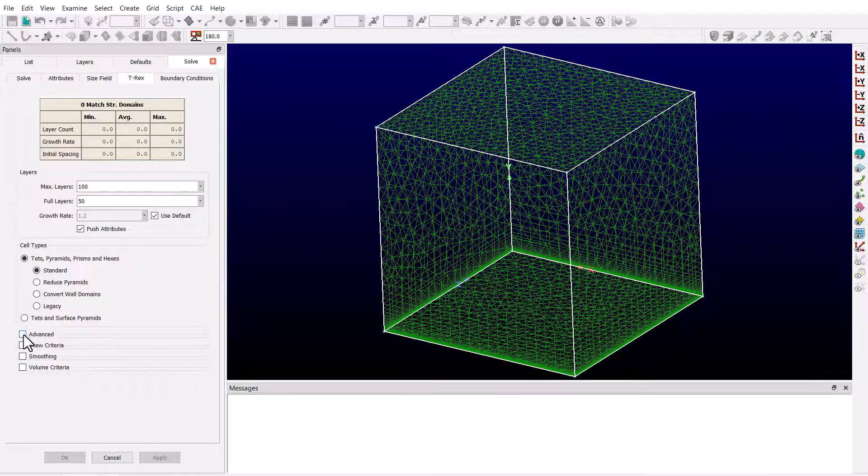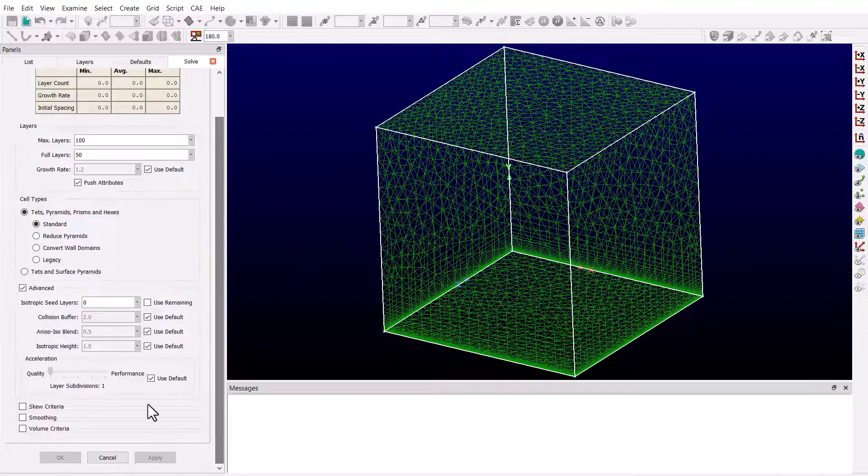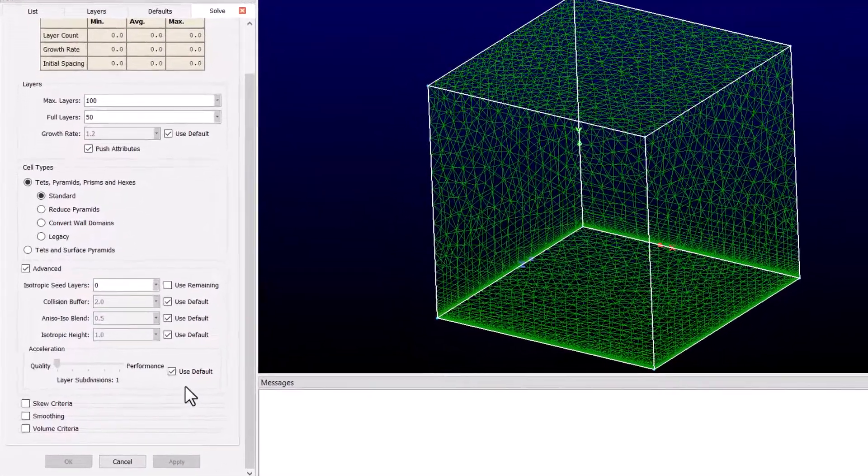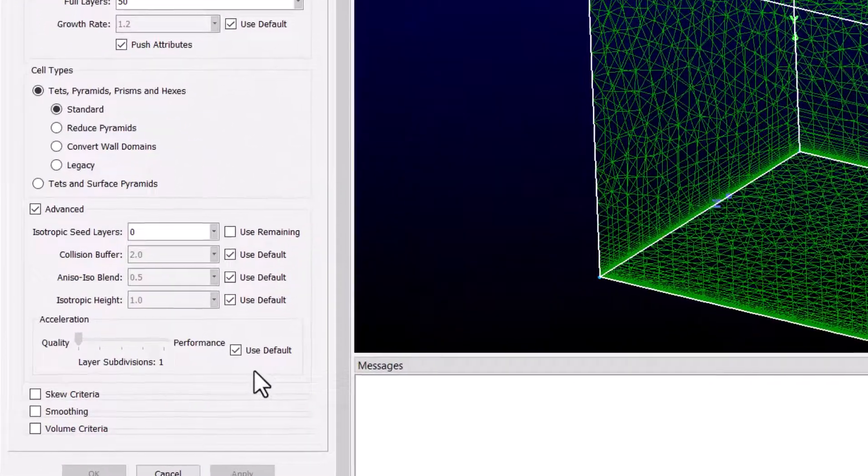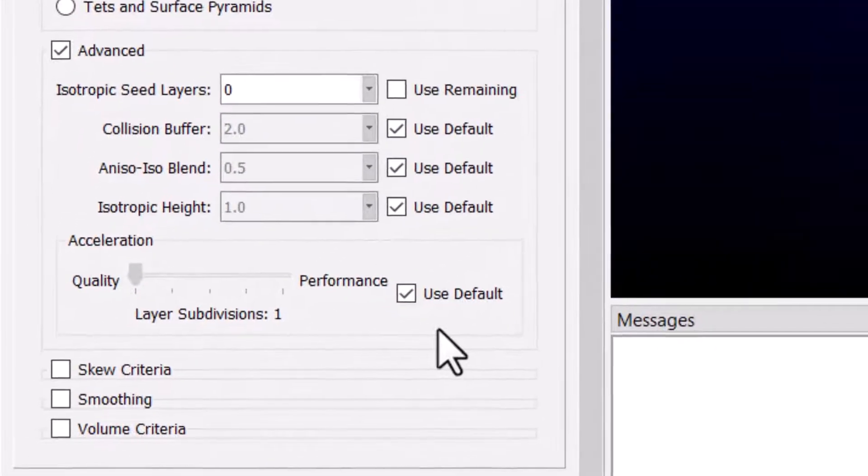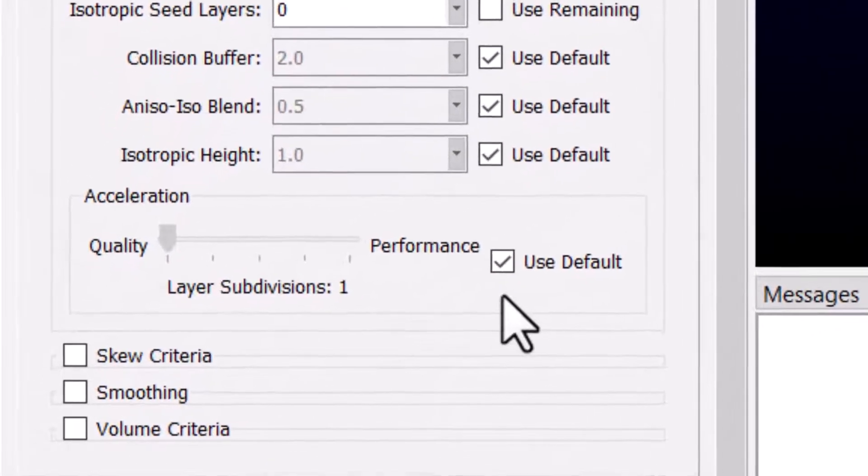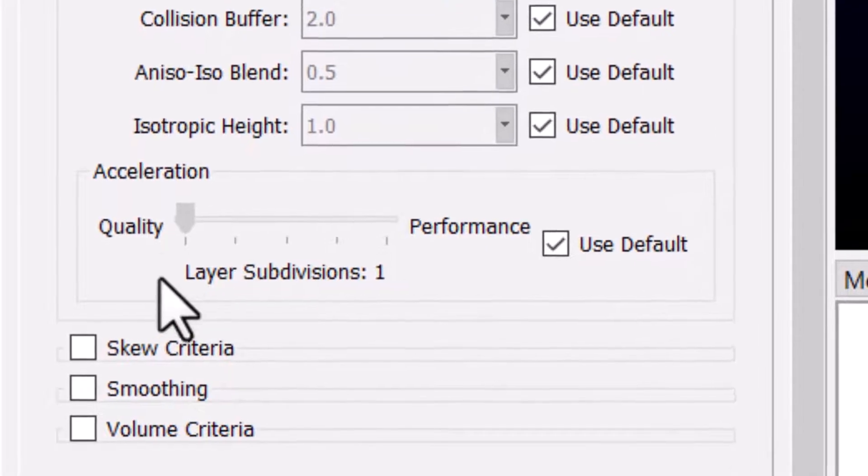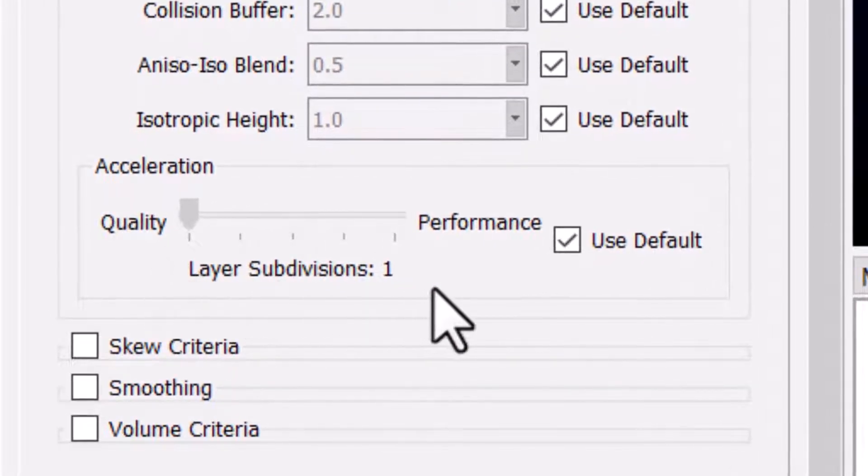If I check the advanced option, we see all the advanced settings for T-Rex, but we're going to focus on this new sub-panel called acceleration, which we just talked about. Right now we have the use default option checked, which puts the slider under quality setting, with the layer subdivision set to 1.